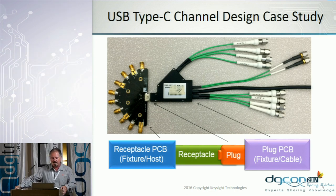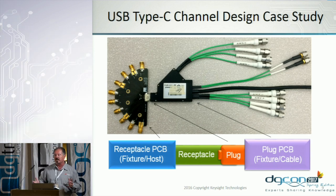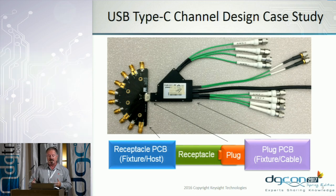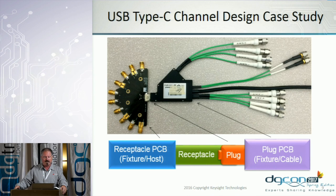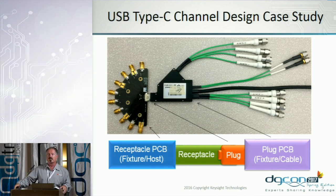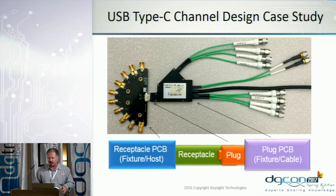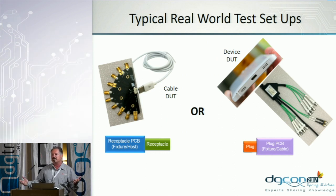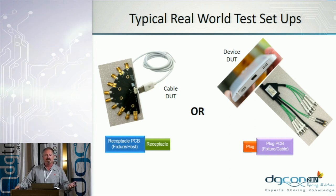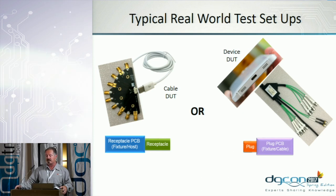For our design case study, we're going to put together two fixtures — normally in the real world an end user would probably use just one, but since we have the capability to do some interesting de-embedding, we're going to put the two fixtures together and get the model of that USB Type-C connector. On the left-hand side we have the receptacle PCB, which is normally where the host resides. On the right-hand side we have the plug PCB, where normally the USB cable would reside. In the real world you'd have two use case models: a cable manufacturer who uses the receptacle PCB, or a device manufacturer — a PC, laptop, or hard drive — who tests using the plug PCB.